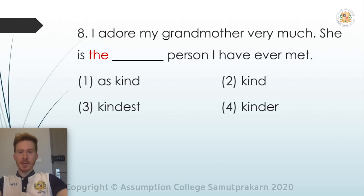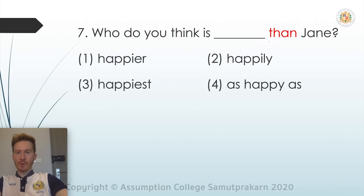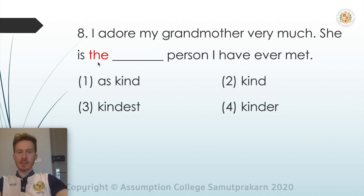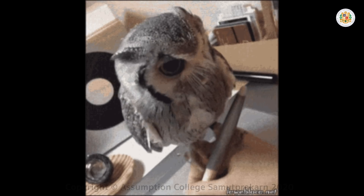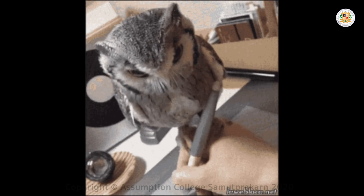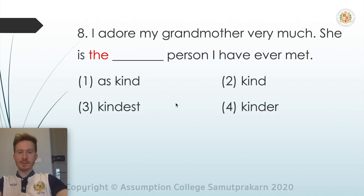Question eight: 'I adore my grandmother very much. She is the ___ person I have ever met.' Just as 'than' suggests a comparative, 'the' before the blank suggests we need a superlative. EST suggests a superlative, so the answer must be number three: kindest.